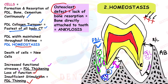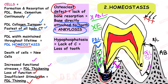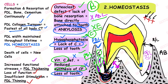Several conditions can disturb the balance of homeostasis. First, an osteoclast defect: if osteoclasts cannot resorb bone, bone keeps forming and joins the cementum without PDL — this is called ankylosis. Ankylosed teeth will lack eruption because they have no PDL. Second, hypophosphatasia — a condition with lack of cementum formation, so PDL has no place to attach and the tooth is lost. Third, vitamin C deficiency impairs collagen fiber synthesis in the PDL, again leading to tooth loss.